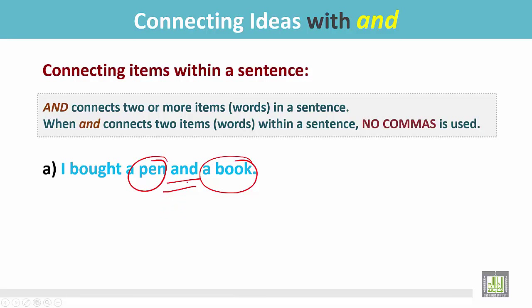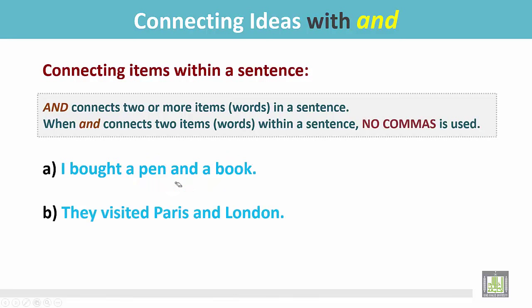There is no comma before 'and.' Example B: 'They visited Paris and London.' Paris is the name of a city and London is also a name of a city. They are joined by 'and' and there is no comma before 'and.'